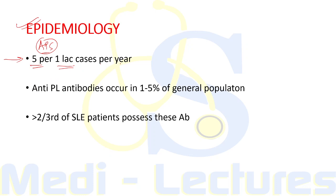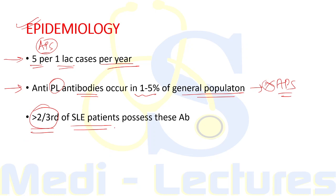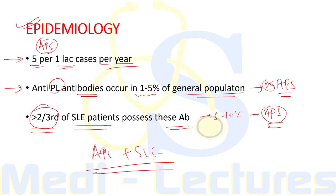Regarding epidemiology, APS is seen at a frequency of 5 per 100,000 cases per year. Antiphospholipid antibodies occur in 1 to 5 percent of the general population, but not all of them develop the disease. Also, more than two-thirds of SLE patients possess these antibodies, but only 5 to 10 percent of such patients will develop clinical manifestations of antiphospholipid syndrome.